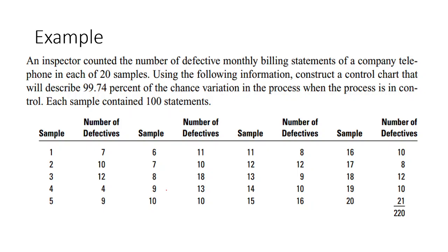Let us understand this with the help of an example. There is an inspector who counted the number of defective monthly billing statements of a company's telephone in each of 20 samples. In every sample, he has counted how many billing statements were defective. In the first sample, 7 statements were defective. In the second, 10 were defective. In the third sample, 12 items were defective and so on. Use the following information. You need to construct a control chart which is going to describe 99.74% of the chance variation when the process is in control. And each sample contains 100 statements.